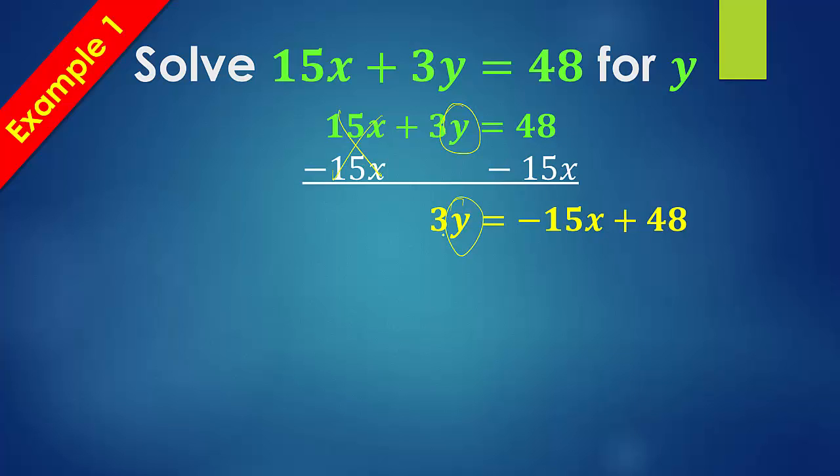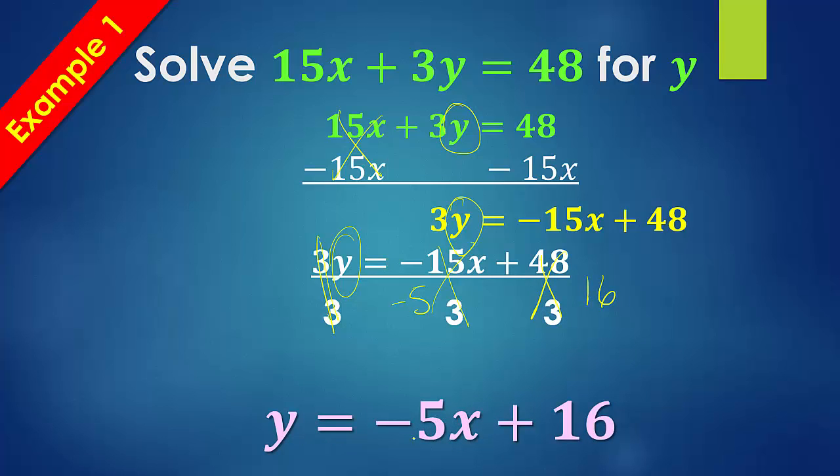So we still want to get this y by itself. We still have a 3 in front of it, so we need to divide that 3 away. So this cancels out, leaving us with just the y. Negative 15 divided by 3, I think we can all agree, is negative 5. And then 48 divided by 3 is 16. So what we end up getting is y equals negative 5x plus 16.